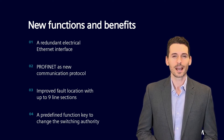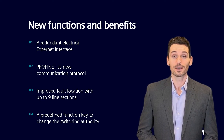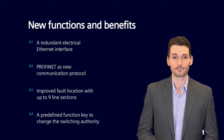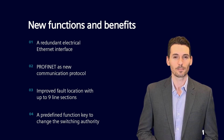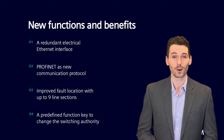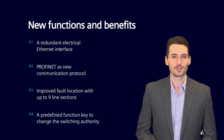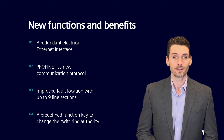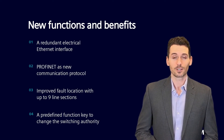Besides the new communication possibilities, C-Protect 5 Compact now also provides an improved fault location with up to 9 line sections for non-homogeneous lines, allowing an even more accurate fault location determination.